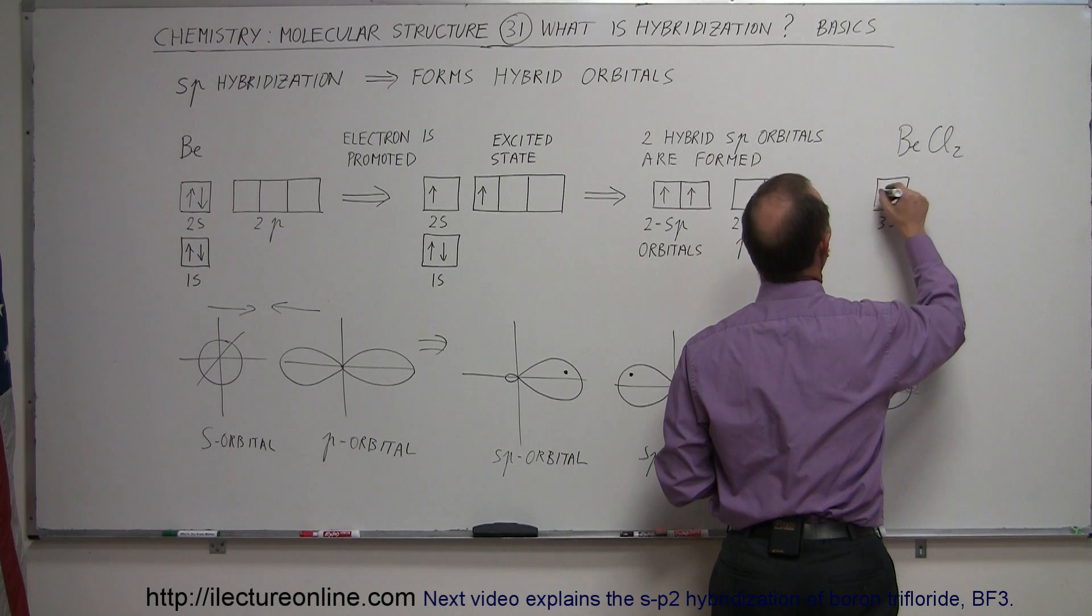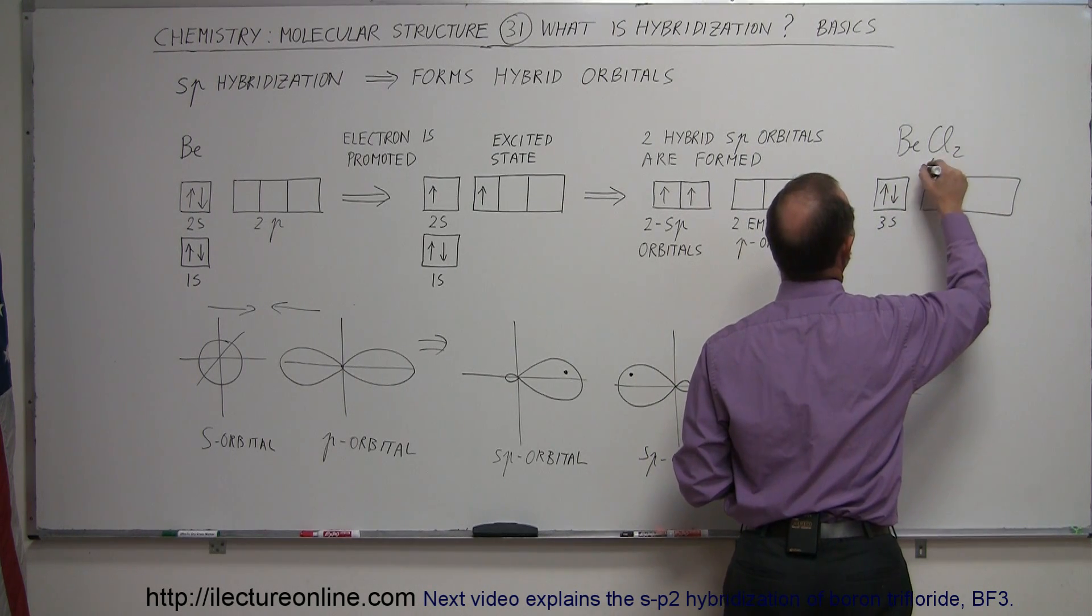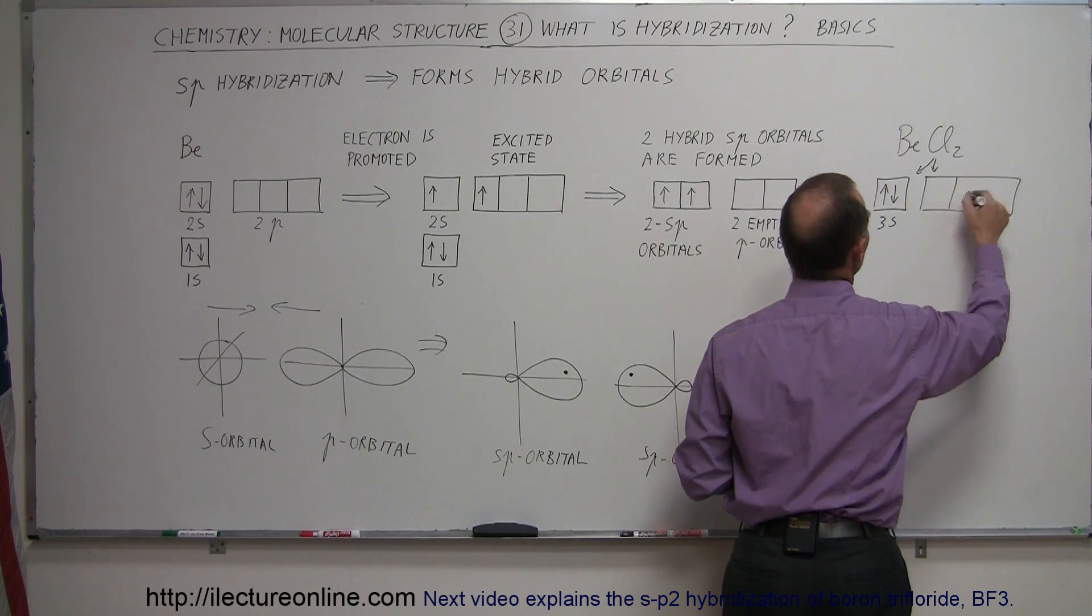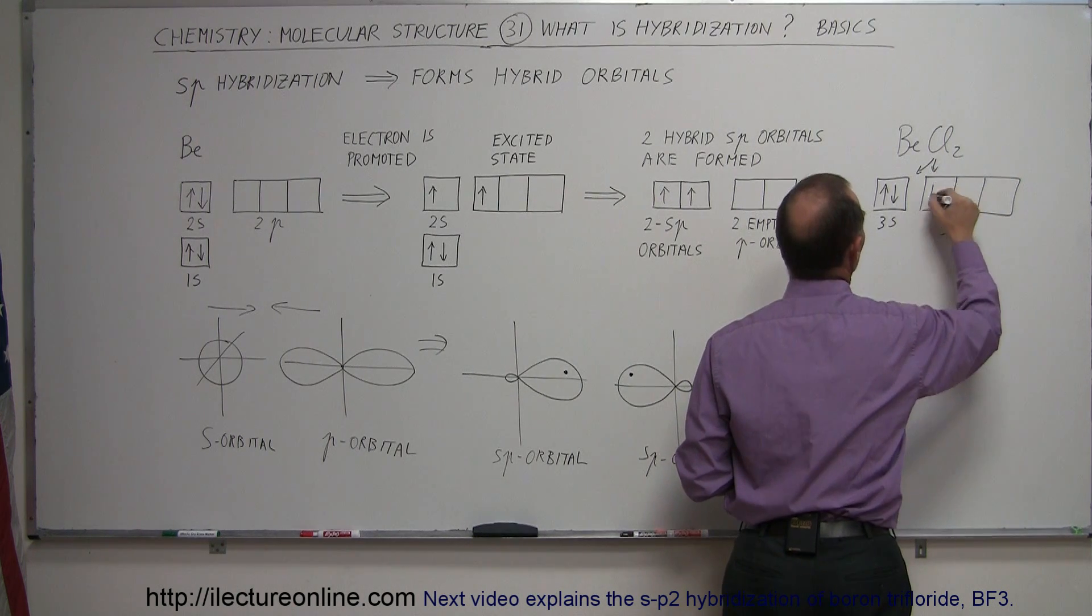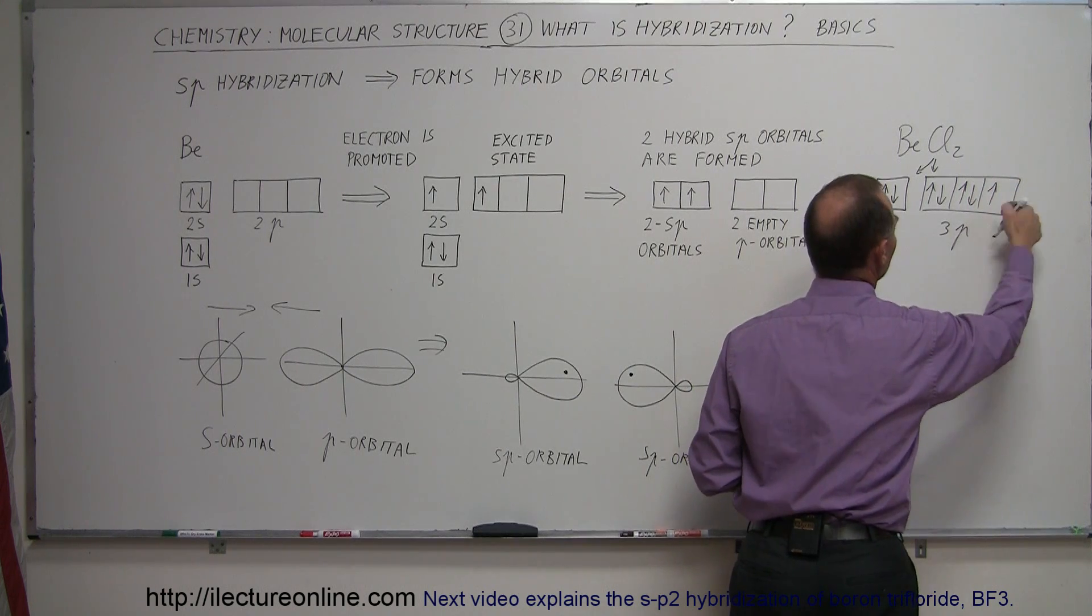So chlorine in the 3s orbital has two electrons, and in the 3p orbitals, so this is chlorine in the 3p orbitals. It has two electrons in that one, two electrons in that one, and one electron there.